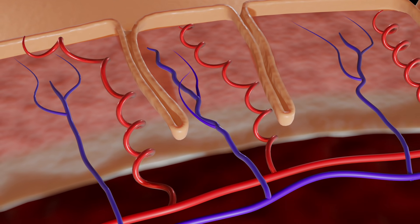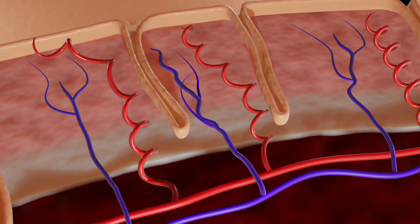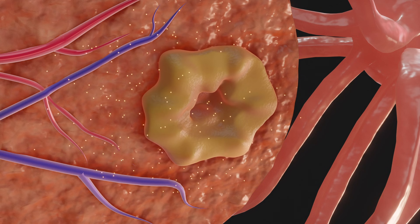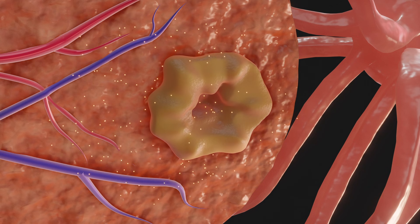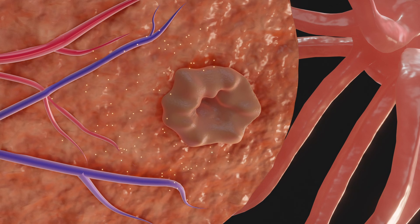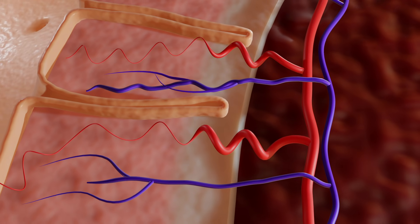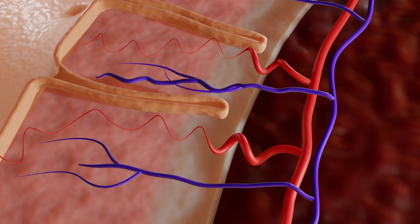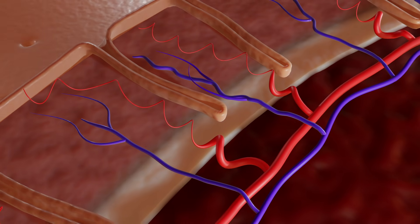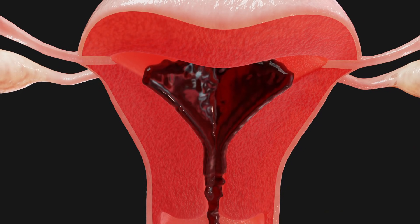However, if the egg is not fertilized and consequently no pregnancy occurs, the corpus luteum degenerates and the progesterone level drops considerably. As a result, the spiral arteries constrict and the mucous membrane is no longer supplied with sufficient blood. It dies and is flushed out together with the unfertilized egg during menstruation. A new cycle has begun.